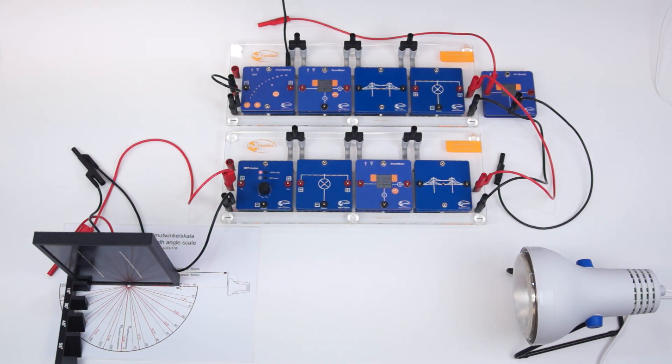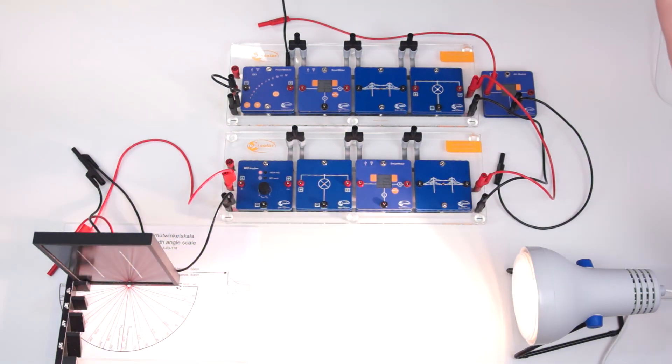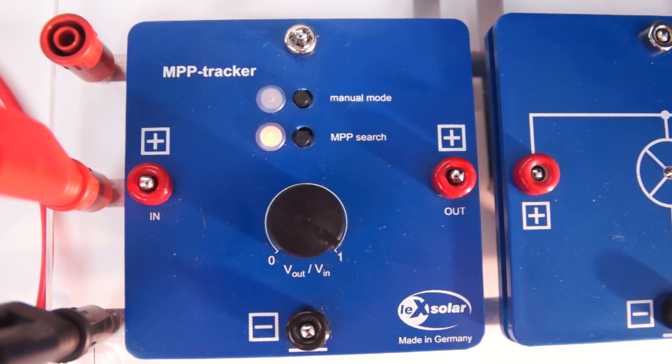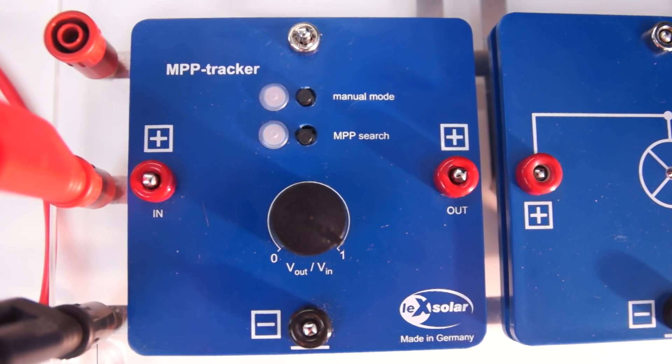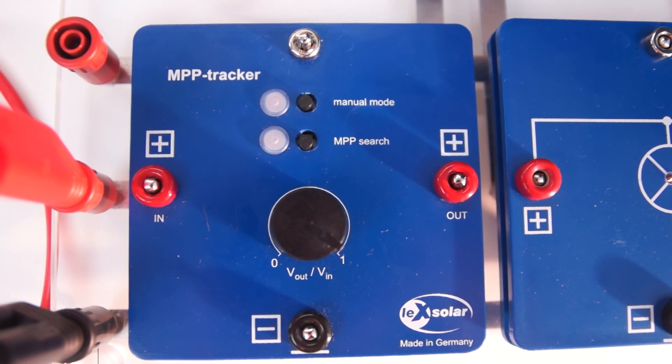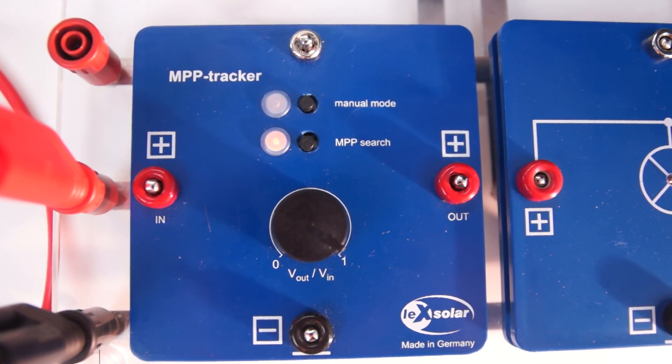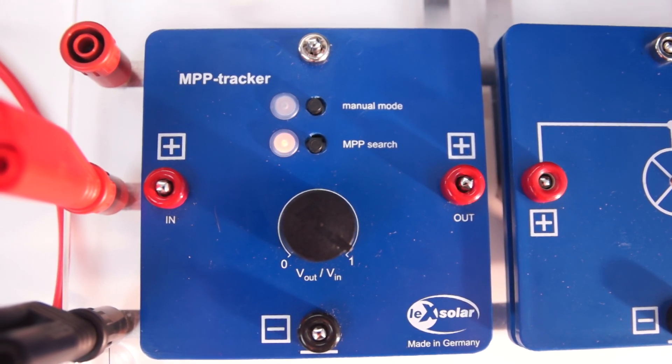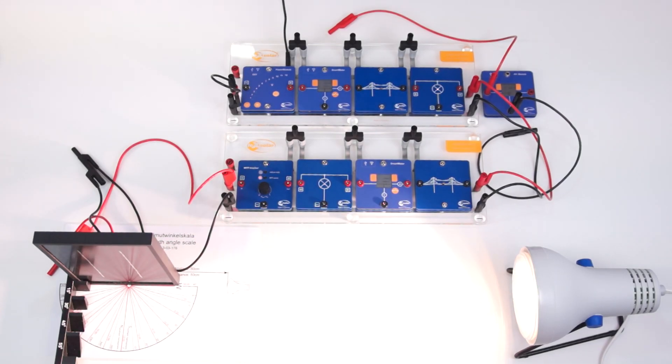Furthermore, we turn on the lamp and simulate a low illumination of the photovoltaic system. With the MPP tracker, it must be taken to ensure that it performs the mode MPP search. This means that it automatically searches the maximum power. When the LED no longer blinks, the solar module delivers maximum performance.